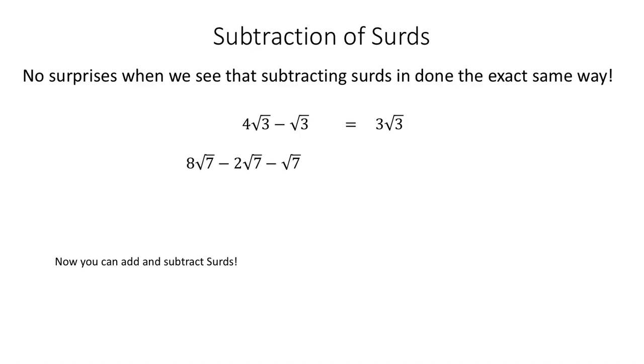8 root 7s, take away 2 root 7, take away another root 7, and that basically is 8 root 7, take away 3 root 7s, which gives me the answer 5 root 7.